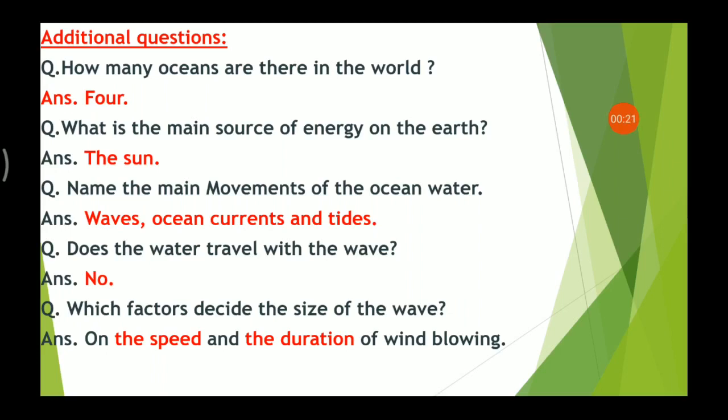Next, name the main movements of the ocean water. The answer is waves, ocean currents, and tides. Next, does the water travel with the wave? Answer is no. Which factors decide the size of the wave?